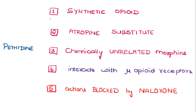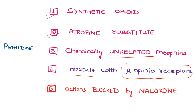Pethidine is a synthetic opiate which is an atropine substitute, chemically unrelated to morphine, but interacts with the mu opiate receptor. It is a synthetic opiate receptor agonist, and the actions produced by pethidine can be blocked by naloxone, which is an opiate antagonist.